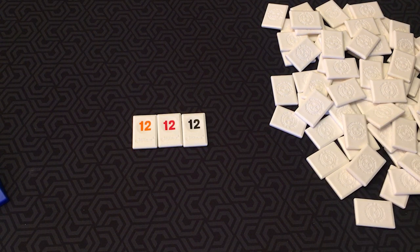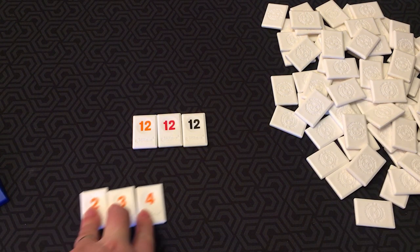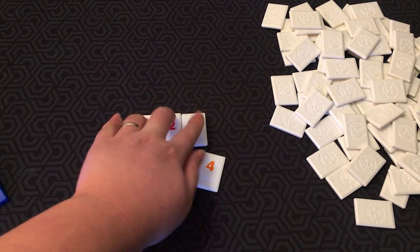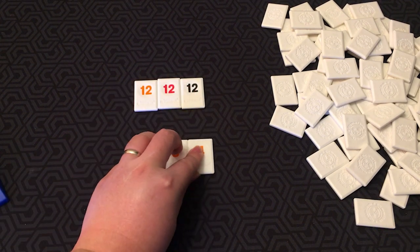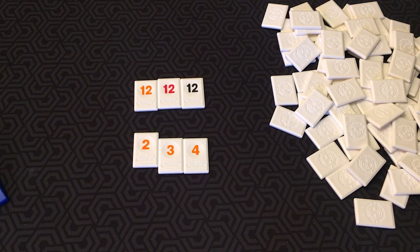A run is a set of three or more consecutive numbers of the same color. So here's a run of yellow 2, 3, and 4. The number 1 is always played as the lowest number. It cannot follow the number 13.